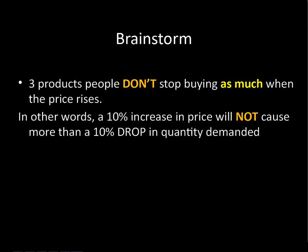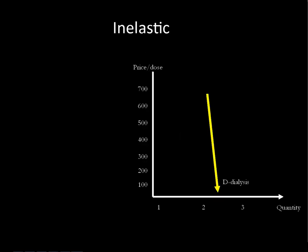Brainstorm three products that people don't stop buying as much when the price rises. In other words, you get a 10% increase in price and it's not going to cause a 10% drop in quantity demanded — we might cut back a little bit. For me, things like contact solution, deodorant — the deodorant could probably triple in price and I'm still going to buy it. And we've got a very small child in the house, so diapers: I'm still going to buy the diapers. The term for this is inelastic demand.